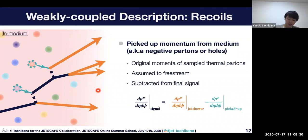In this example, we have orange arrows. Let's say they are particles in the final stage from the shower. We need to add them to get the contribution from the jet shower. But here we have a contribution from the negative contribution from the pickup energy momentum from medium. They need to be subtracted. So here we subtract them and then we can construct the signal by taking account of recoils.